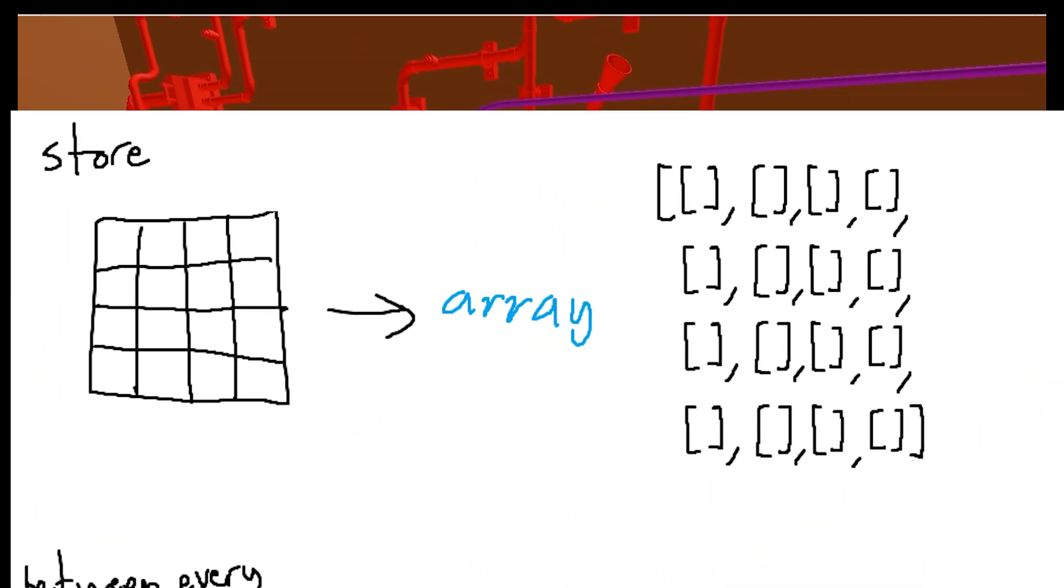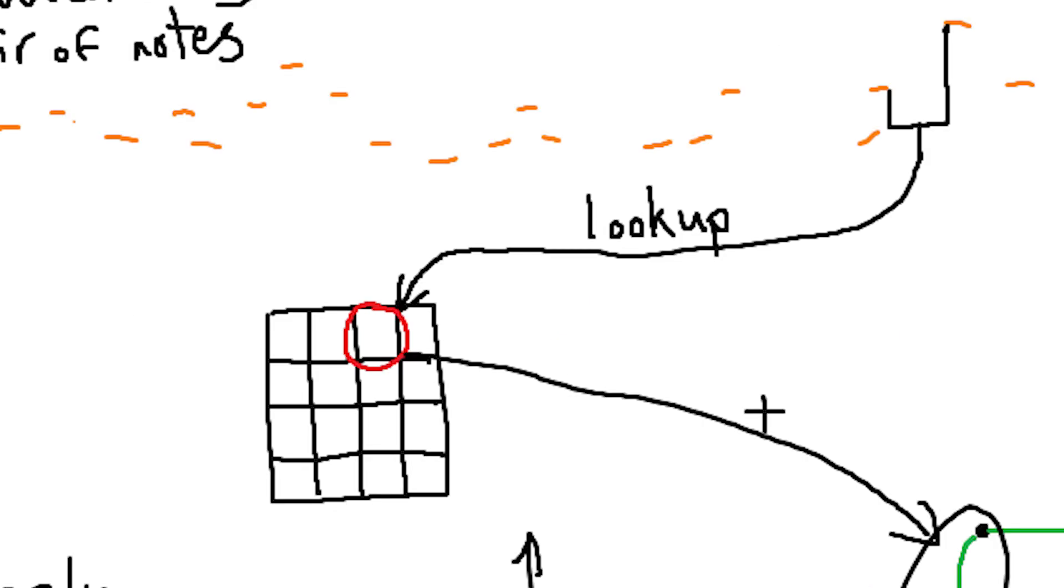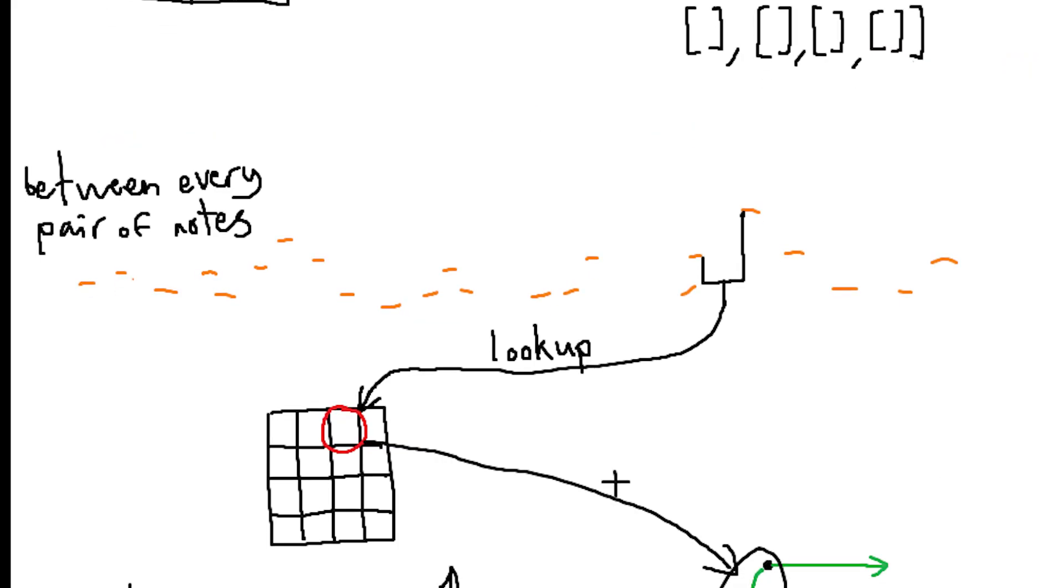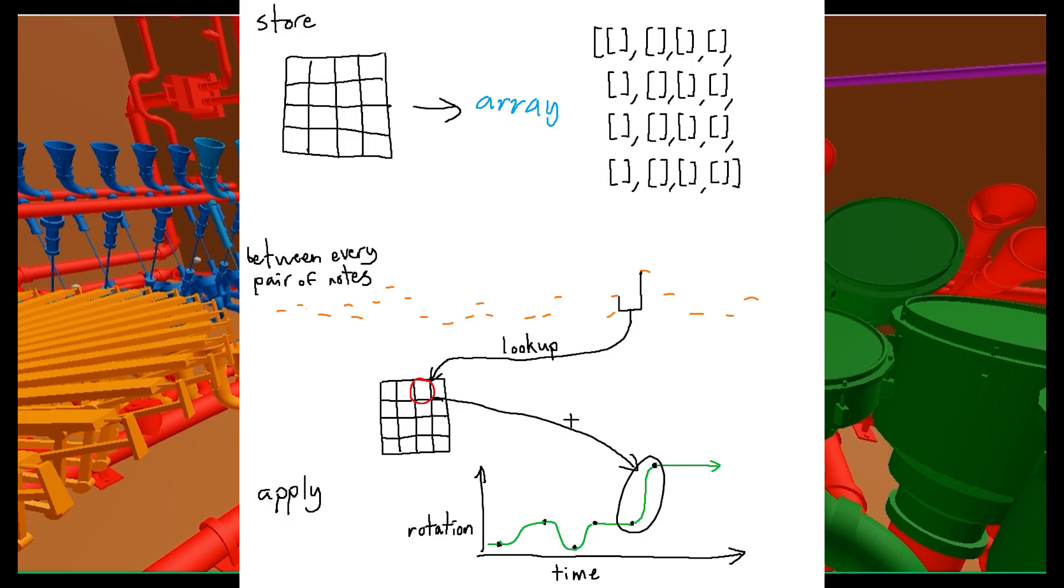Implementing this in code is pretty straightforward. We store the matrix as a 2D array. Then we look through every pair of notes. We find which animation to apply according to the matrix. And then we add it onto the keyframes that we already have. Really, what we're doing is we're making a lookup table of sorts. Only instead of a lookup table, we're making a lookup matrix.